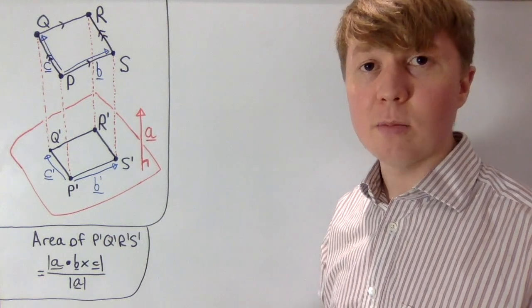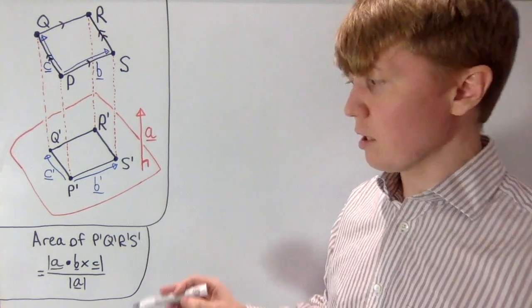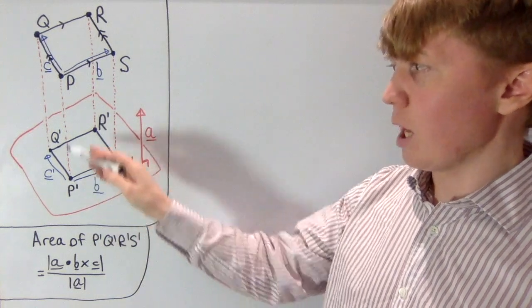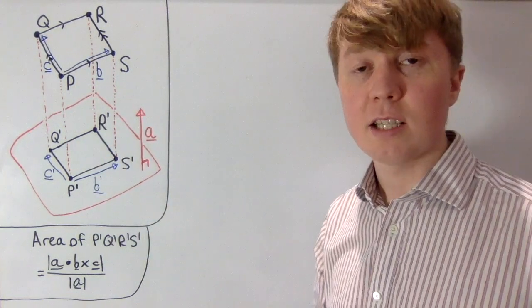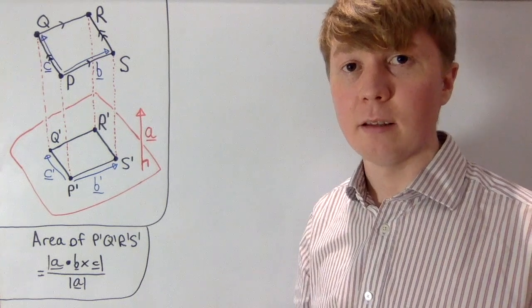If we take a to be a unit vector, then we can actually say that the area of p prime, q prime, r prime, s prime is equal to the scalar triple product of a, b, and c.